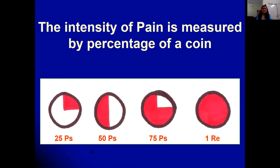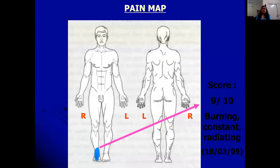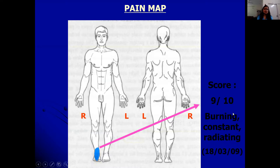For patients who don't understand numbers or faces, we use a money analogy: Is your pain 25 paise, 50 paise, 75 paise, or one rupee? One rupee means maximum pain, 25 paise means less pain. Once pain is assessed, we use pain mapping — a body chart — to record where the pain is, noting its severity, quality, and radiation pattern.